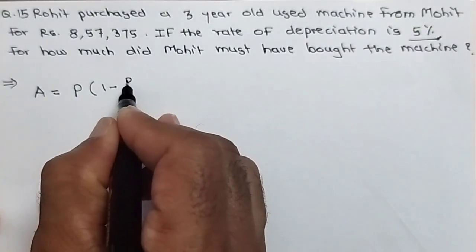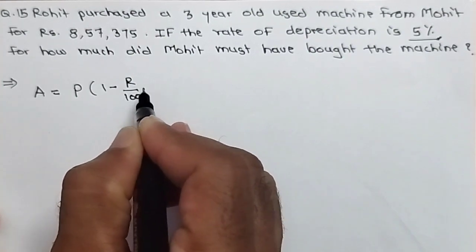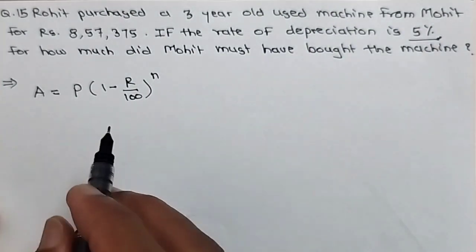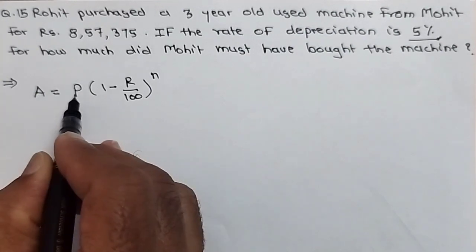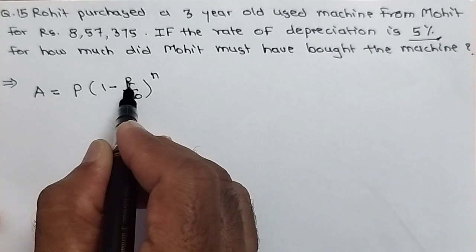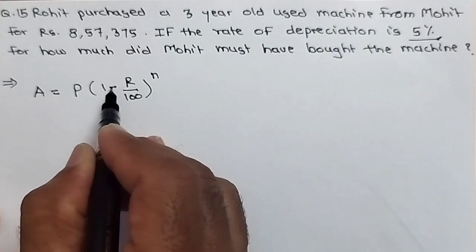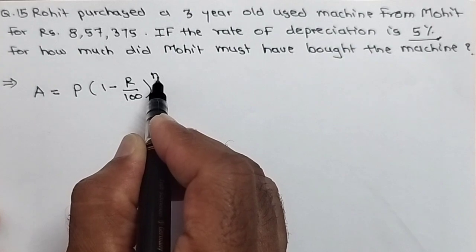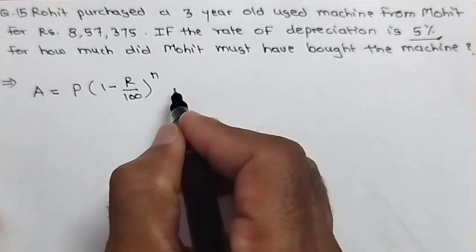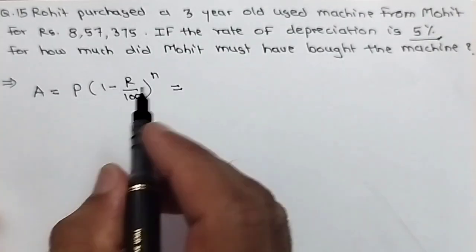So 1 minus R upon 100 bracket raise to N. Where A is the total amount after interest, P is the principal amount, R is the rate of depreciation (here we are taking minus sign), N is the number of years or term. So here we can put the values which we know.